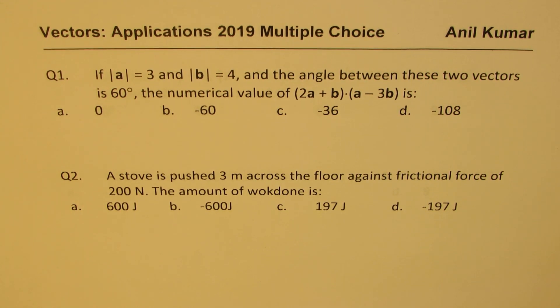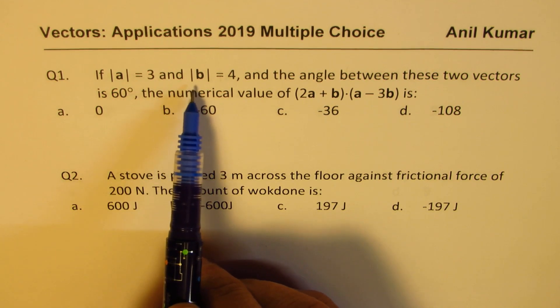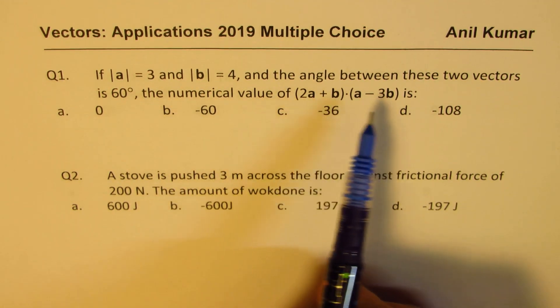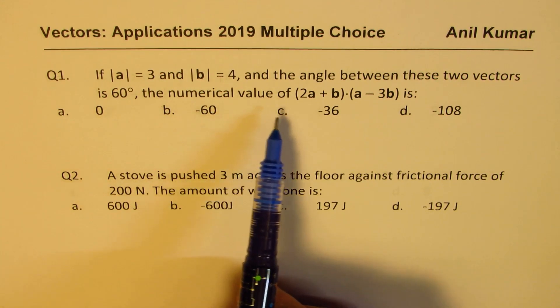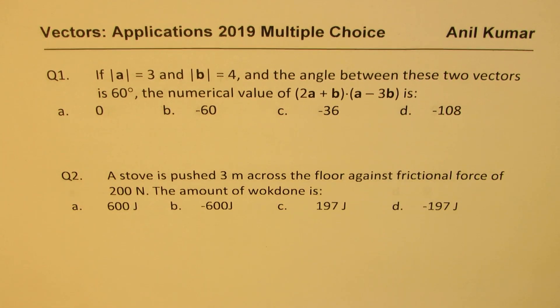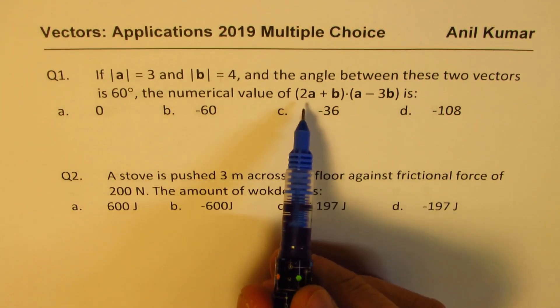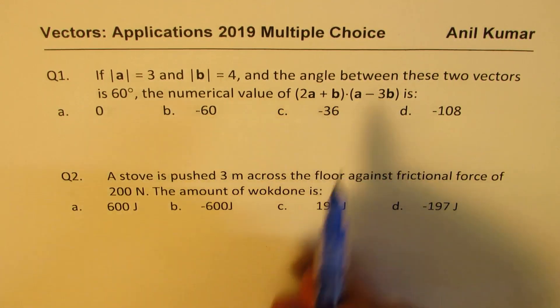Question number one. If magnitude of vector A is 3 and magnitude of vector B is 4 and the angle between these two vectors is 60 degrees, what is the numerical value of (2a + b)·(a - 3b)? So let's figure this out. We can just expand this and do the dot product.